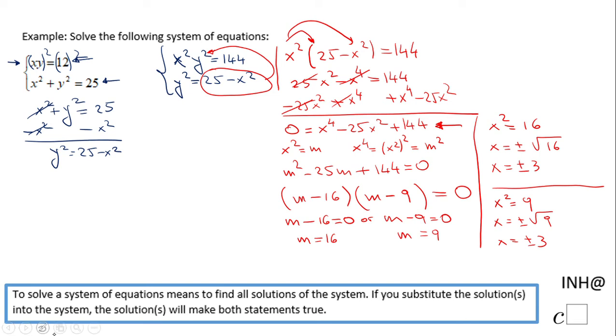I apologize, x squared of 16 is 4, not 3. So now you notice we have four possible x values for this system of equations, and I have to find for each one the y.